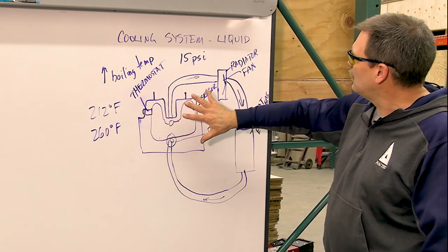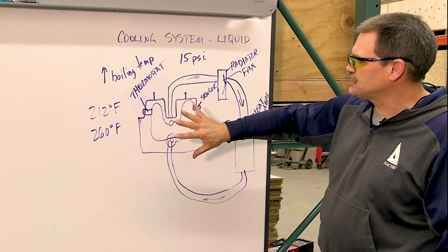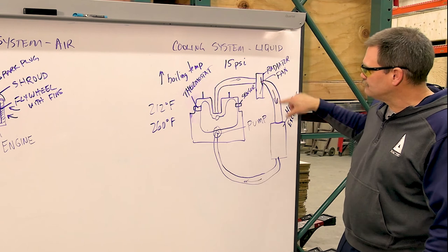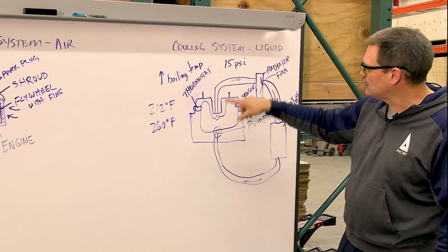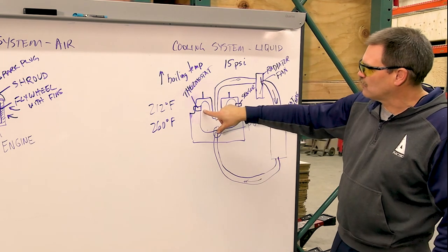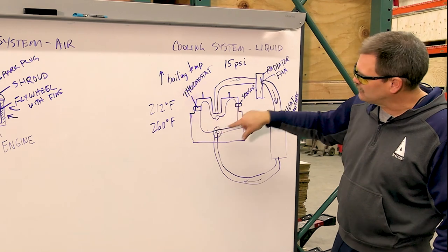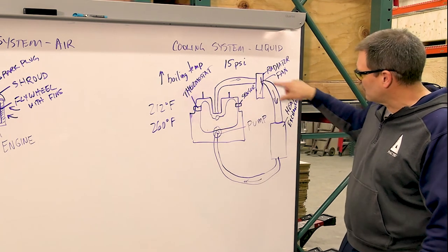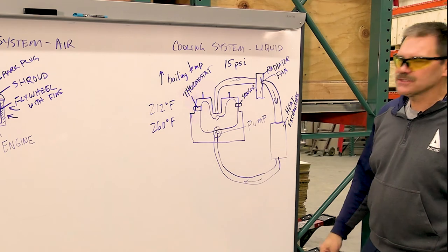You have a thermostat that will open and close. Once the water and antifreeze gets hot, it'll open up, and then it'll flow it through the whole circuit. Before the thermostat opens, it'll run it through the engine. And then once it gets hot enough, then it'll run it through the rest of the circuit.